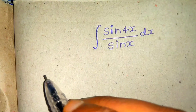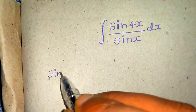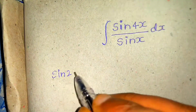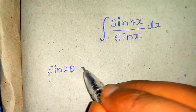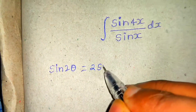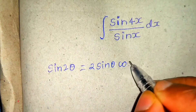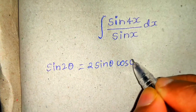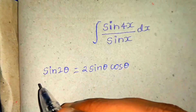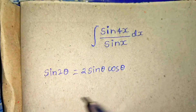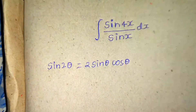Since trigonometry is involved, formulas will obviously be there. Let me give you the formula of sine two theta: sin(2θ) = 2sinθ cosθ. This formula we will use throughout this question, and I hope this will be the only formula needed apart from integration.